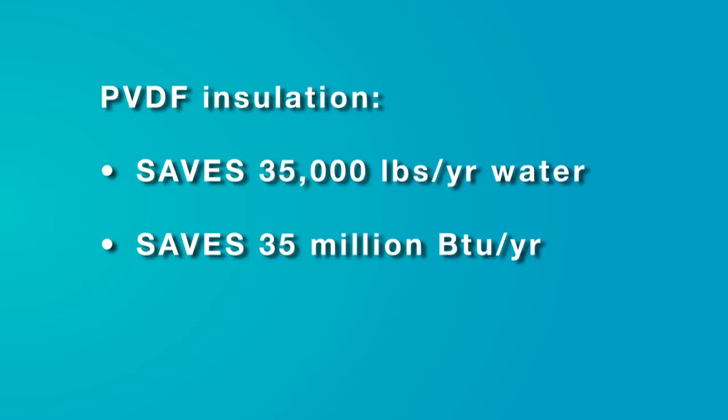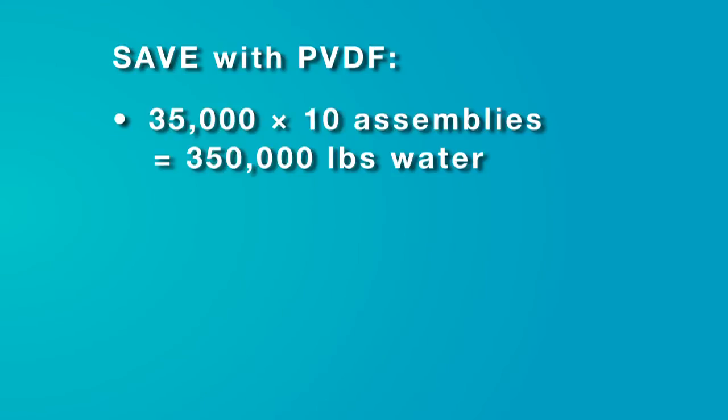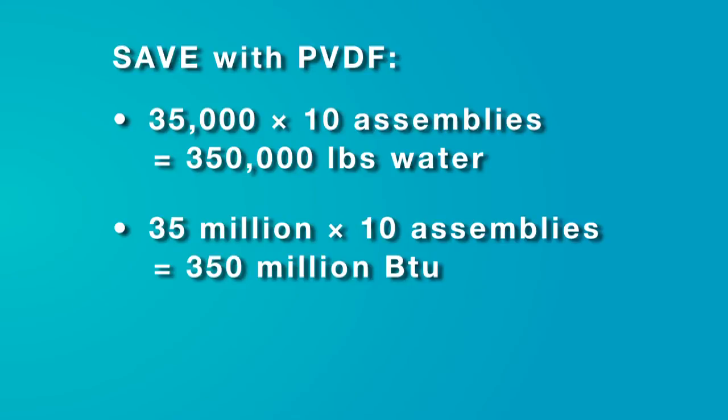Using PVDF insulation cuts those numbers in half, providing a savings of 35,000 pounds of water and 35 million BTUs. Now, multiply these numbers by the 5 to 10 dispersion panels installed for a typical application and the savings become significant, and they are for every year of operation.